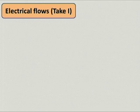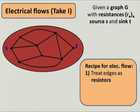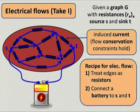The simplest definition of electrical flows is the physics 101 definition. Imagine you have an undirected graph with one resistance R_e assigned to each edge, and source S and sink T. The recipe is simple: treat edges as resistors with resistance R_e, connect a battery to S and T, and look at the current that settles in this resistor network. That current is the electrical ST flow. This is a very natural and intuitive definition.